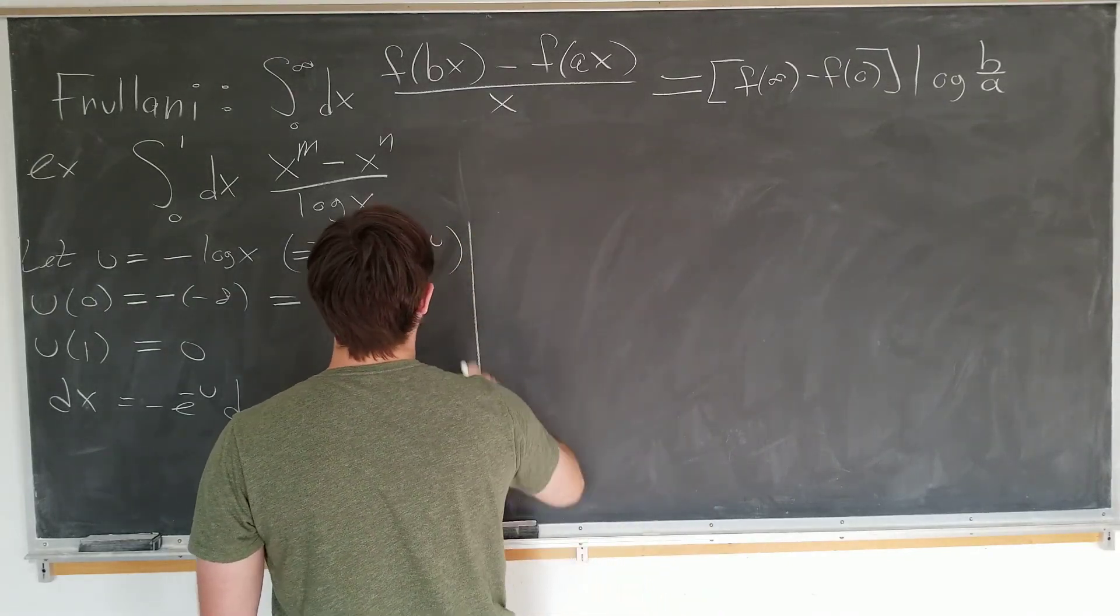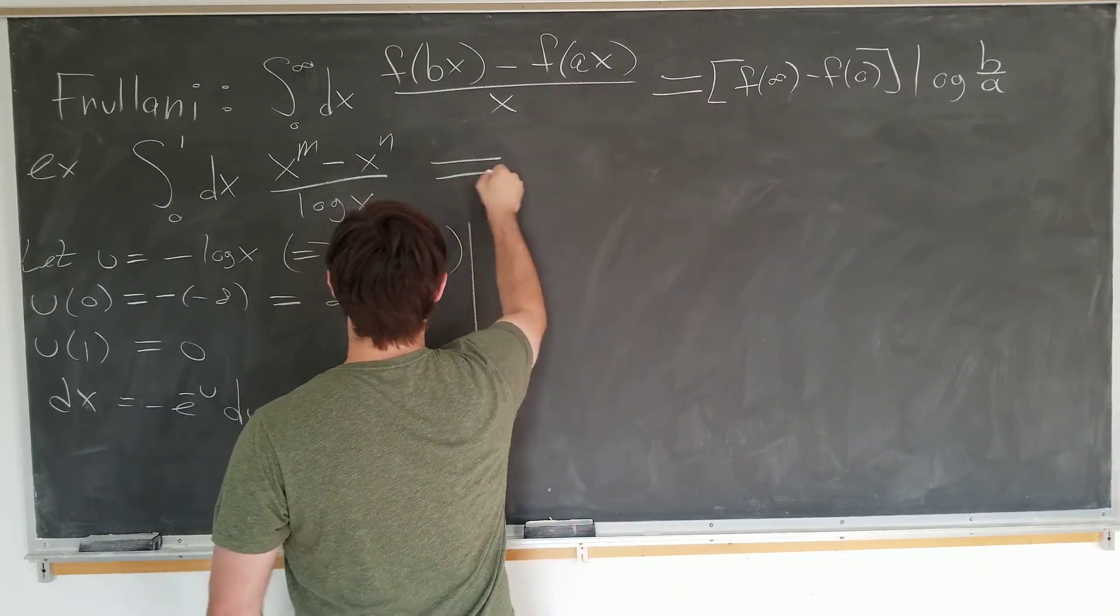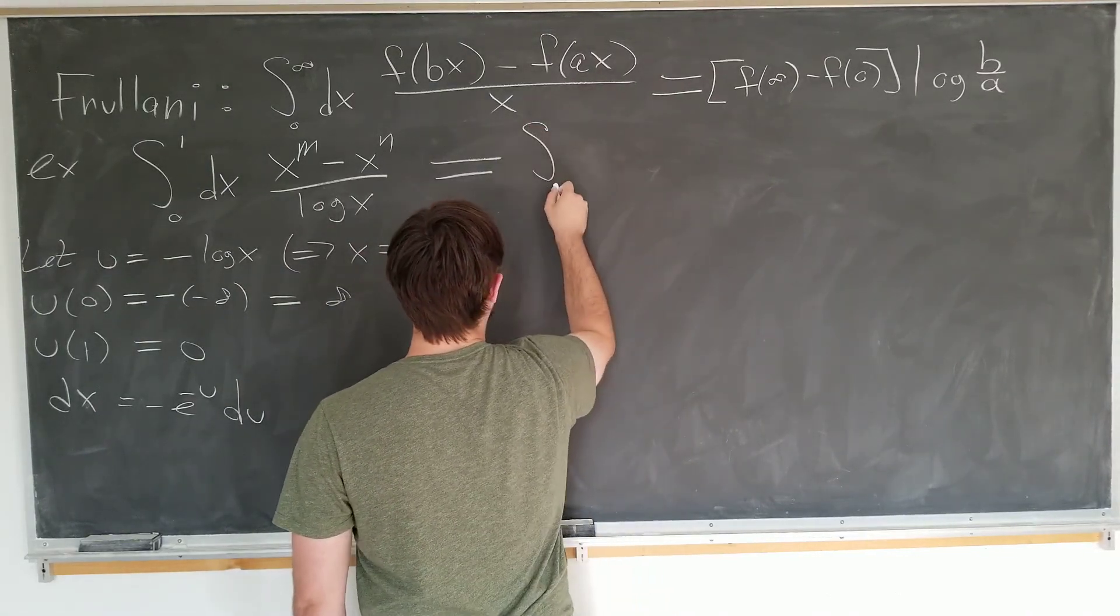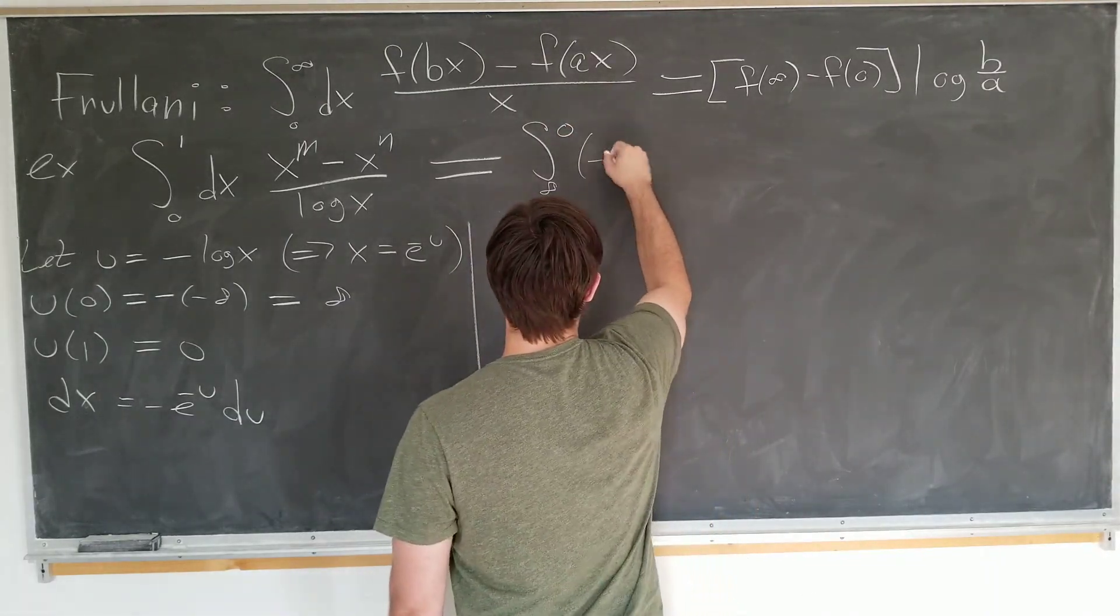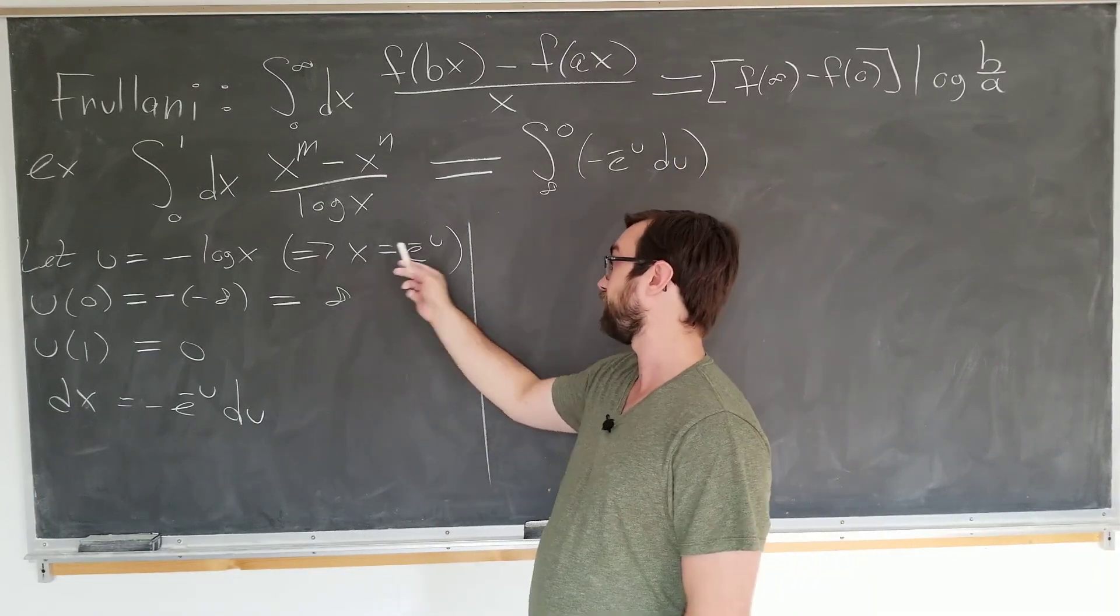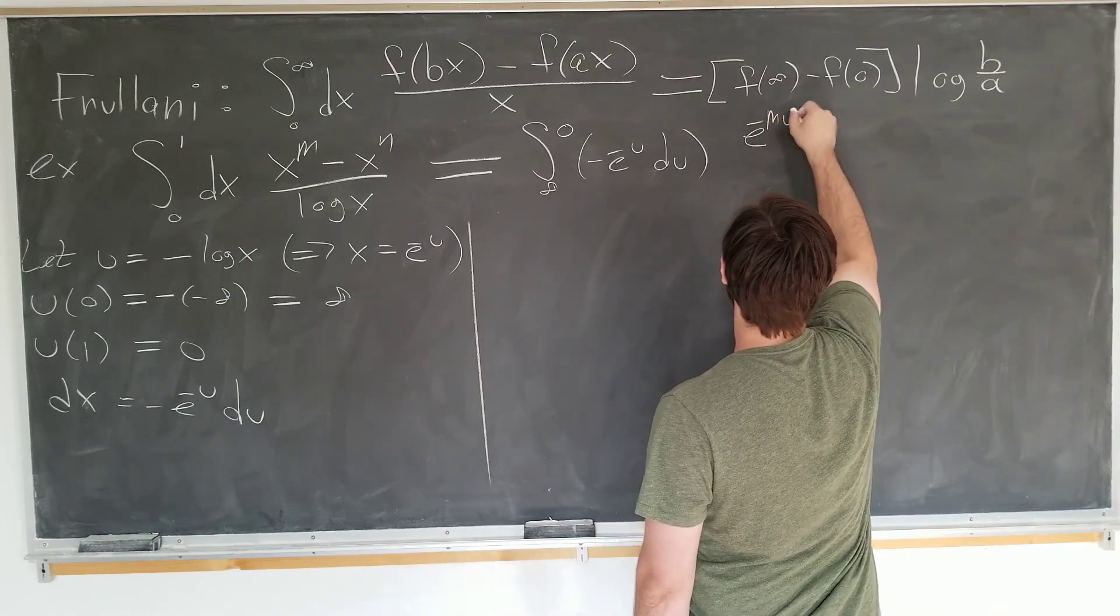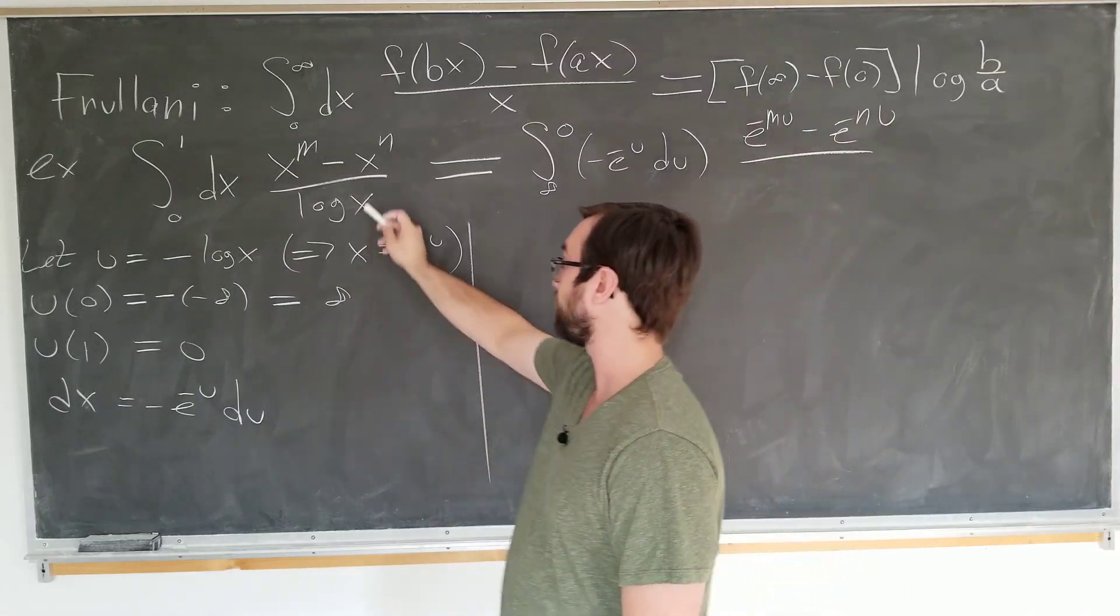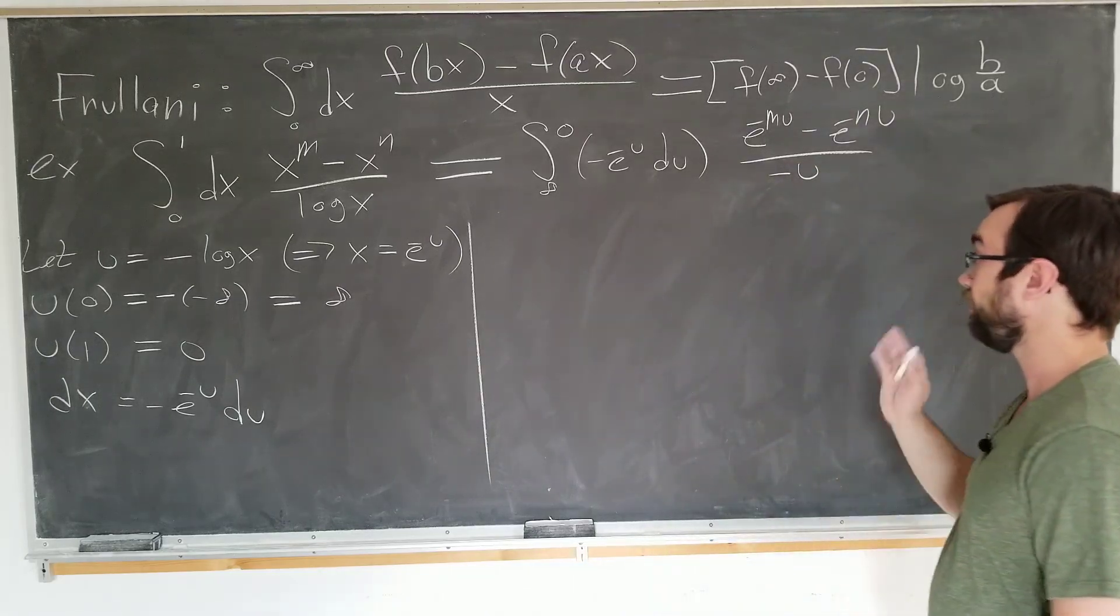Let's evaluate it. Alright. Your integral in question now becomes, well, 0 to 1 becomes infinity to 0, which is kind of weird, but we'll deal with it. Infinity to 0. Our dx becomes minus e to the minus u du. And we have x to the m here. Well, x is this. Just raise this to the mth power. This is e to the minus m u minus e to the minus n u. And now we have our x log x actually. It's minus u. Don't forget the minus sign. It's very important for this problem.